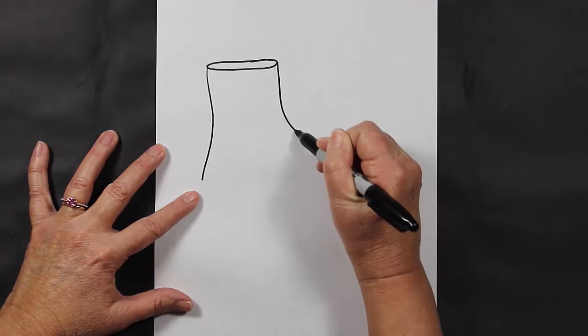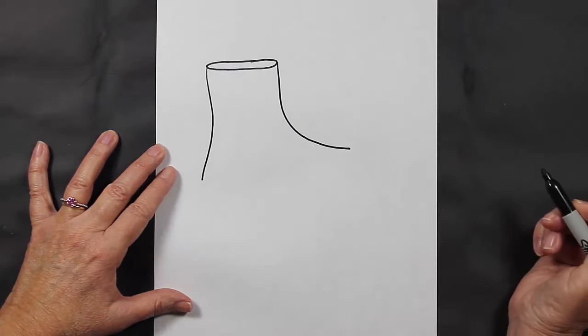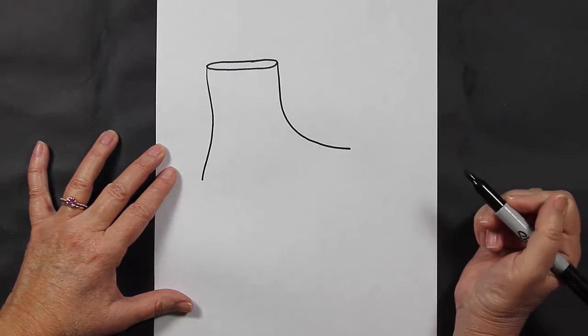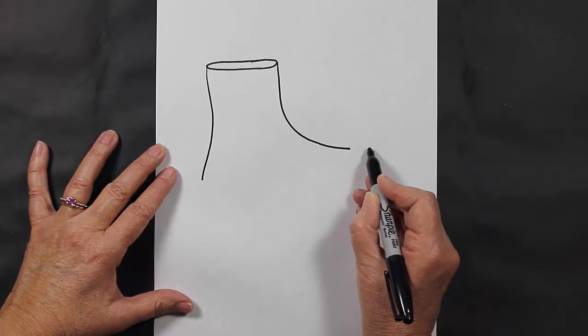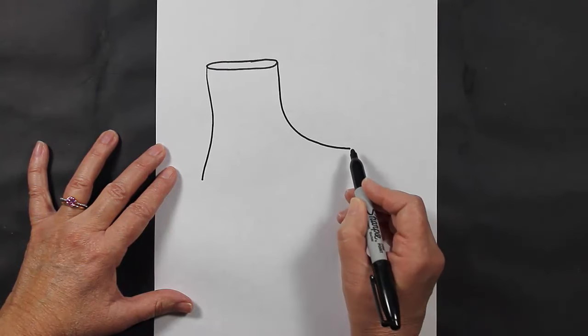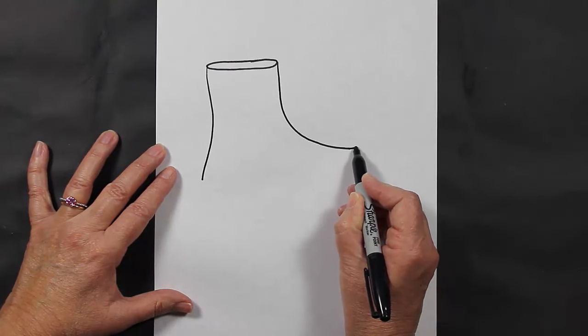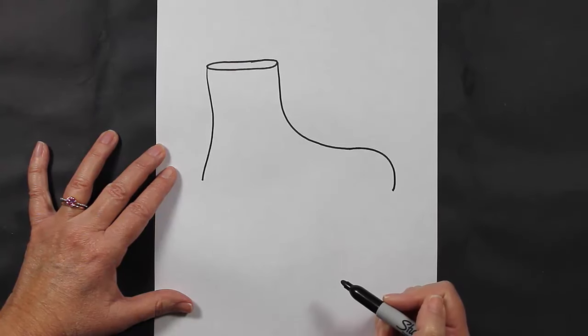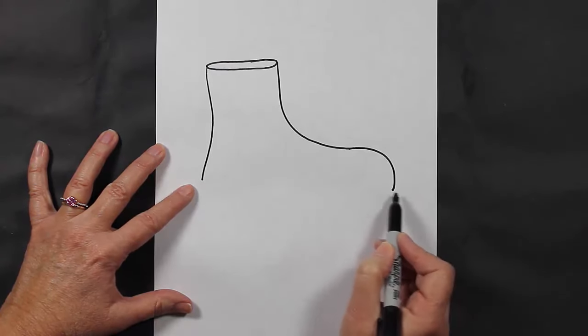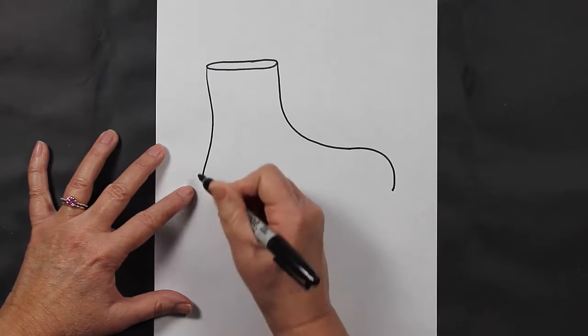Now what we're going to do is continue this line and come down. Let me show you: continue the line and come down. That's the front of the shoe. Now it looks to me like I need to come down a little bit more on this side.